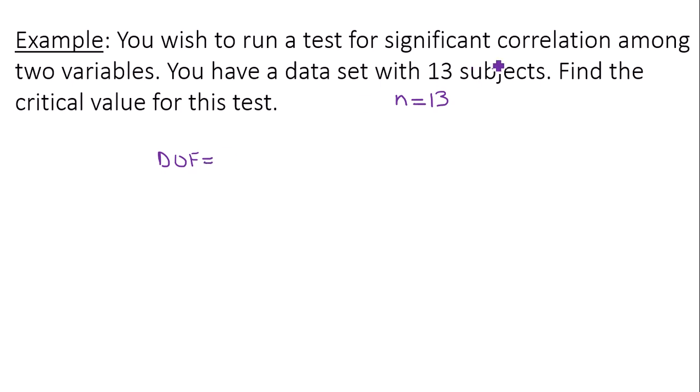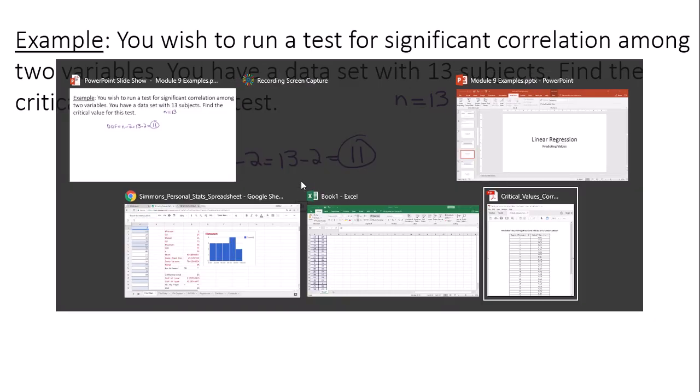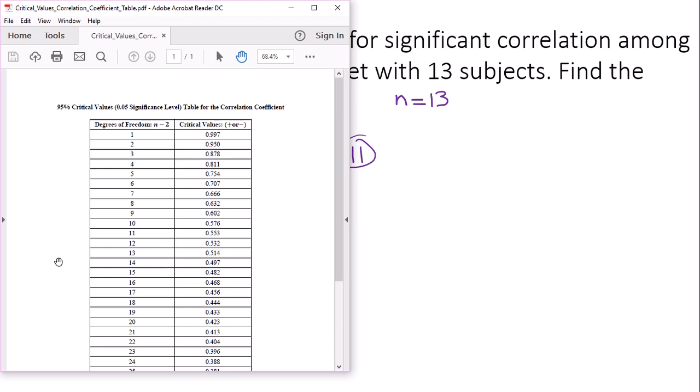My degrees of freedom for this type of test, for a test for correlation, is always n minus 2. 13 minus 2, which is 11 degrees of freedom. So go to your critical value table. There's one given to you in the exercise that you're working on.